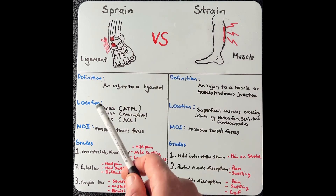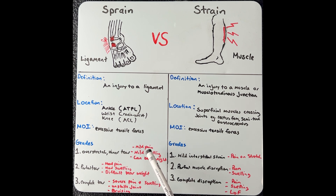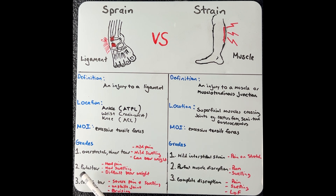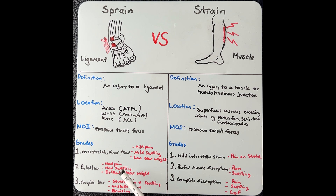Starting with sprains: a first degree sprain is where the ligament is overstretched with a minor tear, and the individual is likely to experience mild pain and swelling but can bear weight at that joint. At grade two, there'll be a partial tear of the ligament, leading to moderate pain and swelling, and they'll have challenges bearing weight. Grade three is a complete tear of the ligament, leading to severe pain and swelling, unstable joints — so they won't be able to bear weight — and bruising is common.